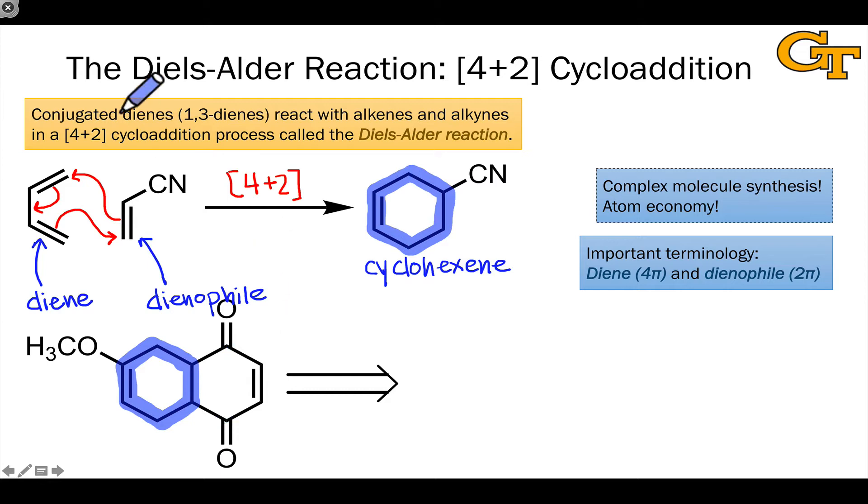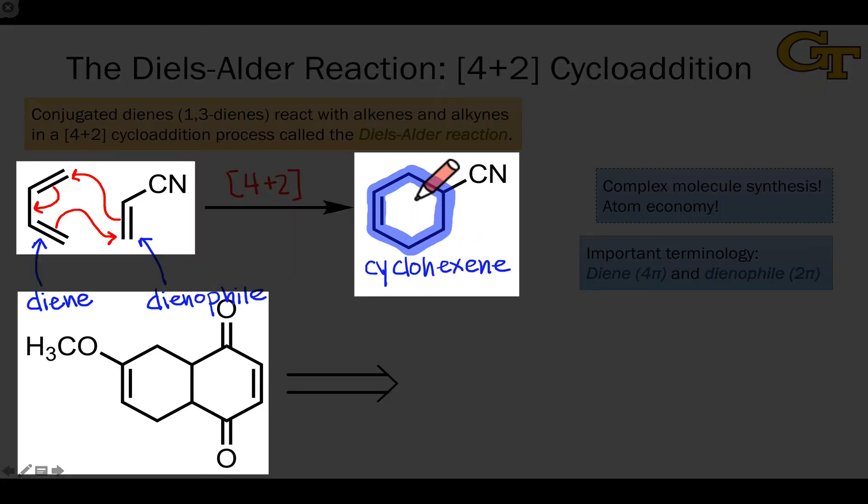And so to deepen our understanding of this reaction, let's just take a minute and work backwards from this product or target to the substrates that could have been combined to form it. In other words, what diene and dienophile can this be made from? Well, if we look at the example above, we see that the reaction establishes two new sigma bonds that are two bonds away from the double bond within the cyclohexene.